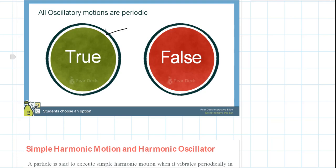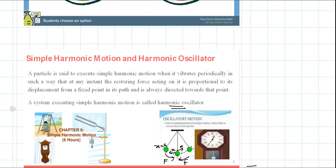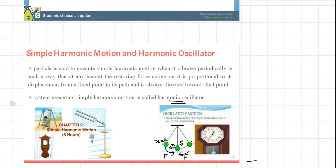The periodic motion of Earth around the Sun is not oscillatory. For simple harmonic motion or a harmonic oscillator: a particle is said to execute simple harmonic motion when it vibrates periodically such that at any instant the restoring force acting on it is proportional to its displacement from the fixed point in its path and is always directed towards that point.